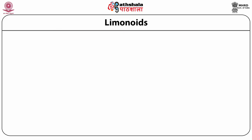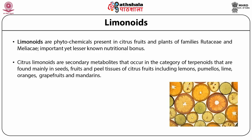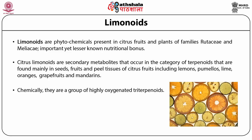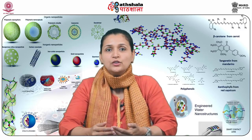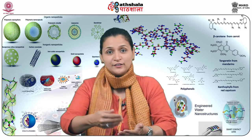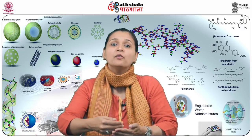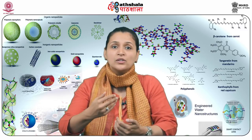Limonoids are a class of chemicals very rich in citrus fruits. These secondary metabolites present in the seeds, fruits, and pulp of citrus fruits — including lemons, pomelos, lime, oranges, grapefruits, and mandarins — are a group of highly oxygenated triterpenoids which are anti-cancerous as well as hepatoprotective. Limonoids have found prevalence in lemons, citrus peels, seeds, and the pulp.